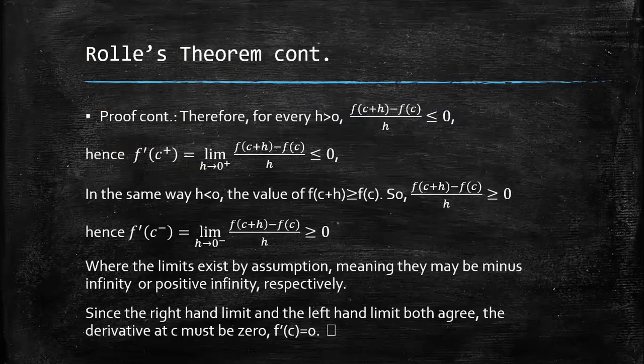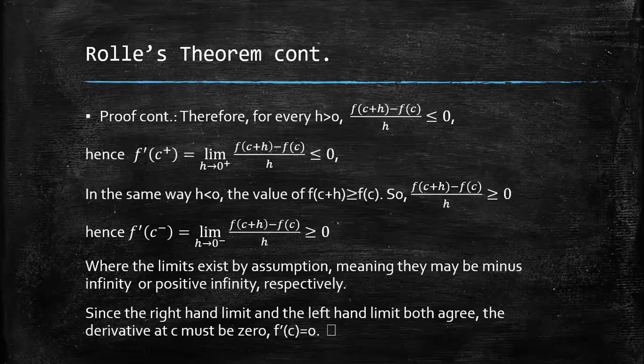Therefore, for every h greater than zero, [f(c + h) - f(c)]/h is less than or equal to zero. Hence, f'(c) on the right-hand side is equal to the limit as h approaches zero from the right of [f(c + h) - f(c)]/h, which is less than or equal to zero.